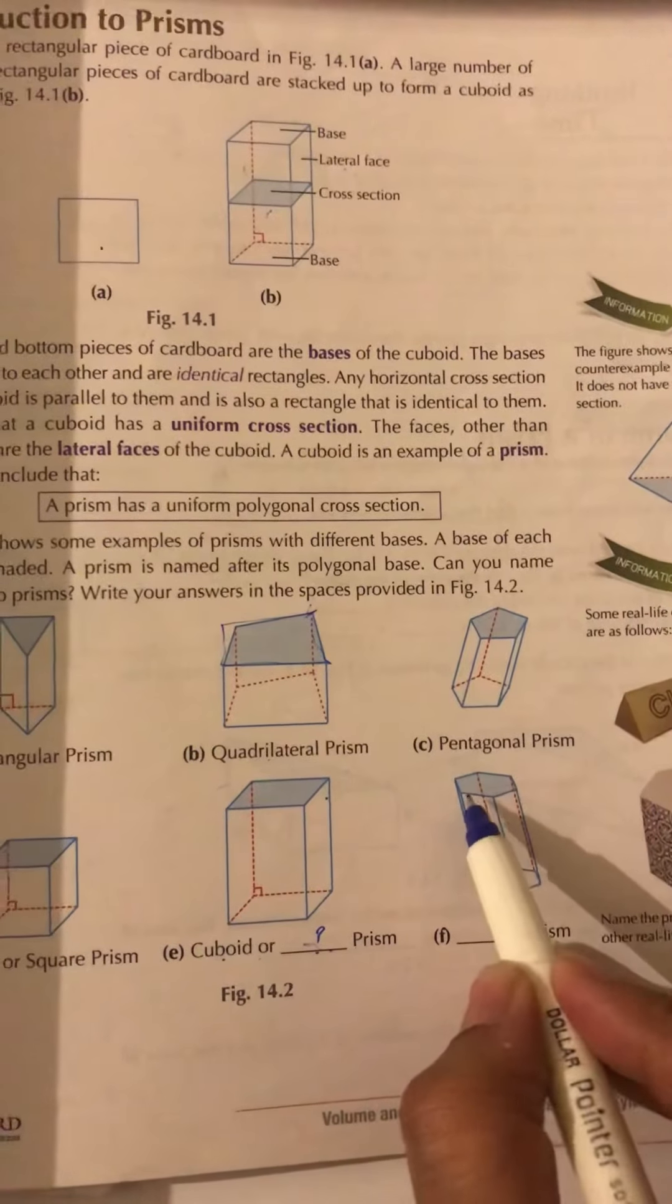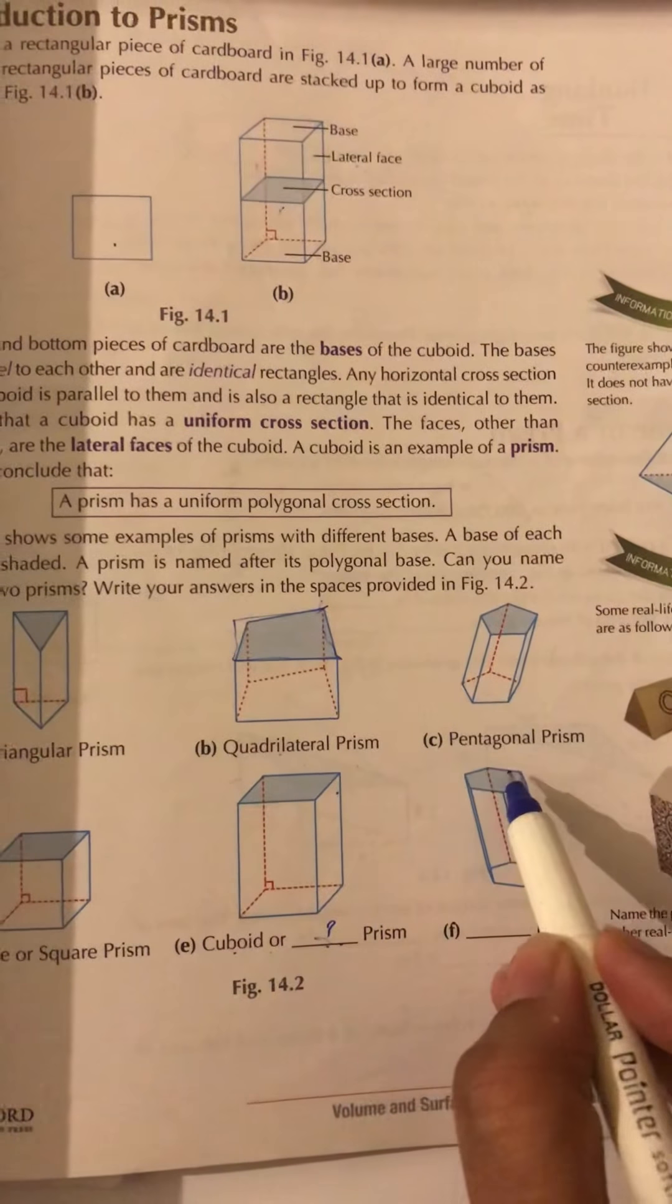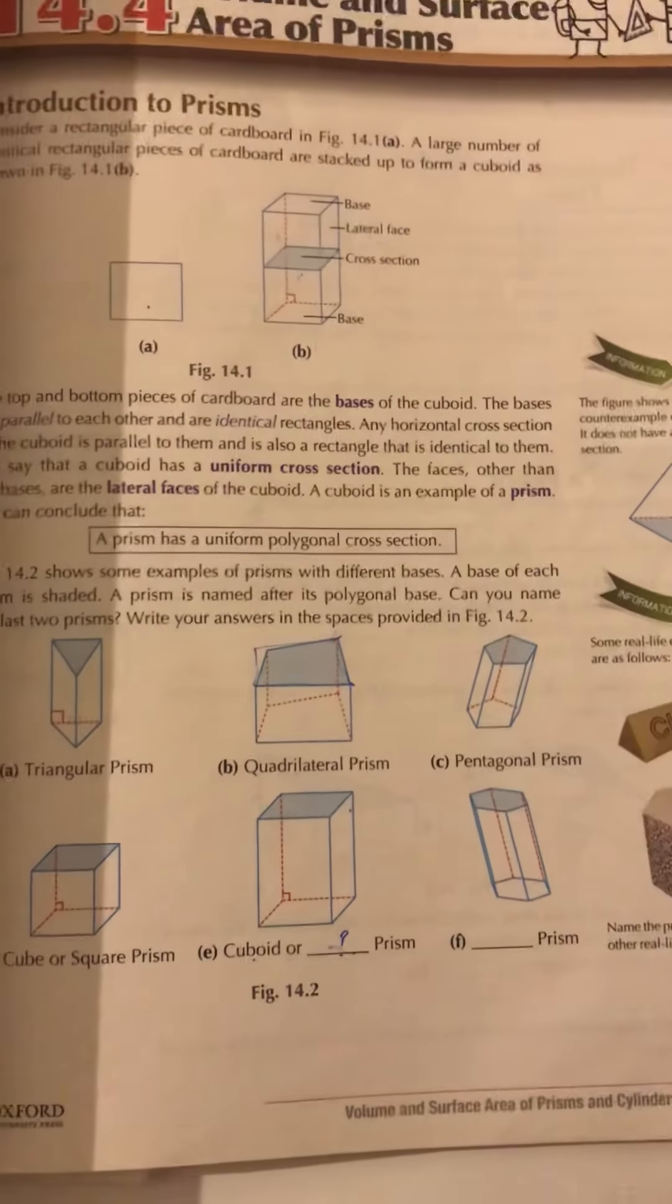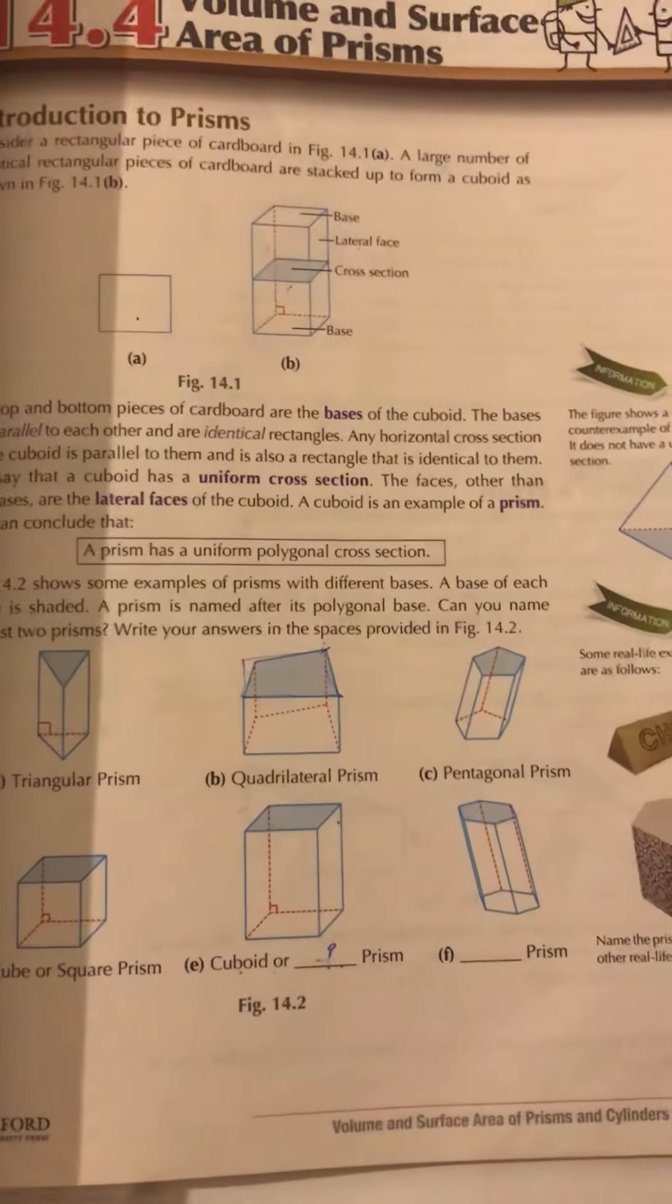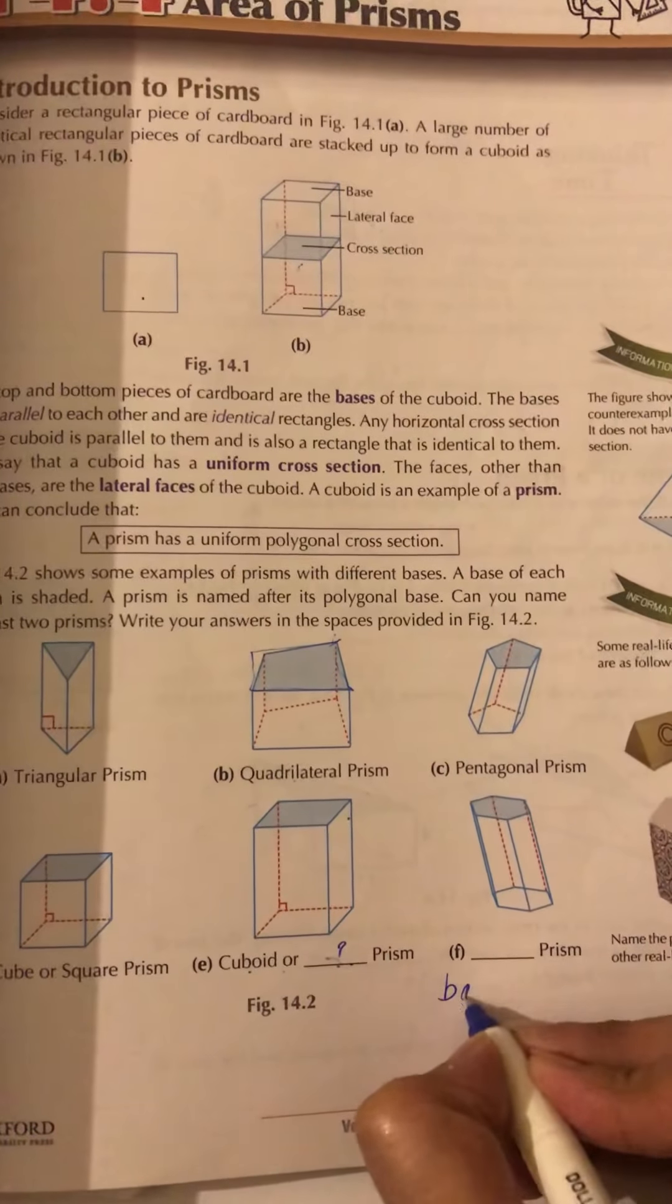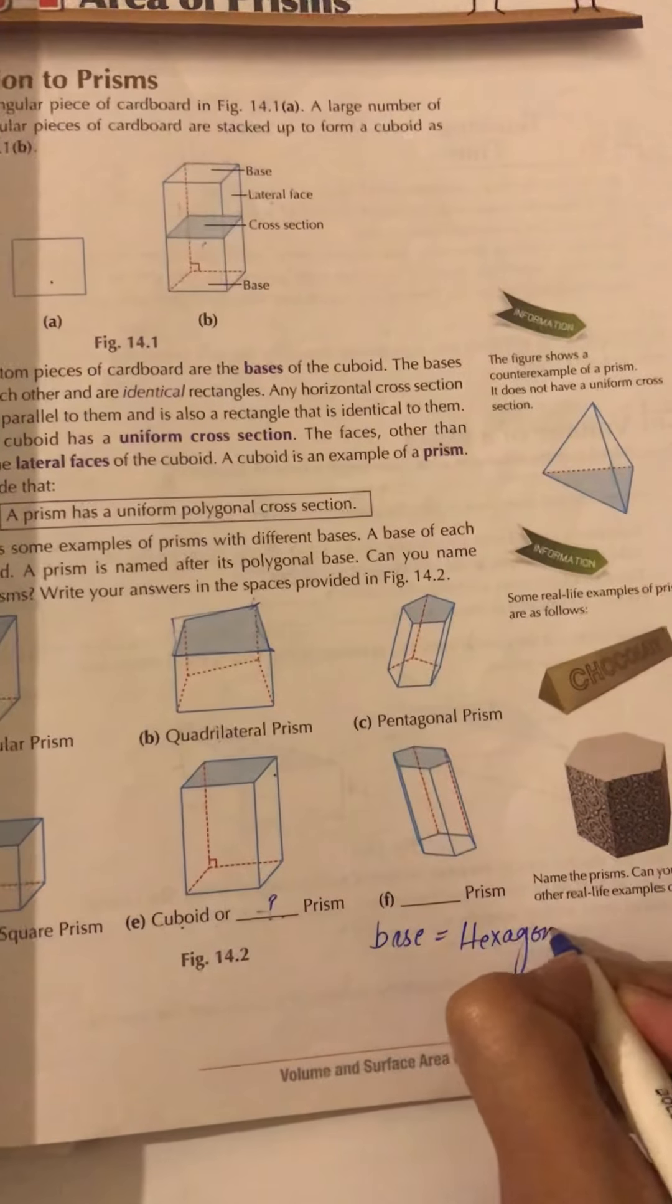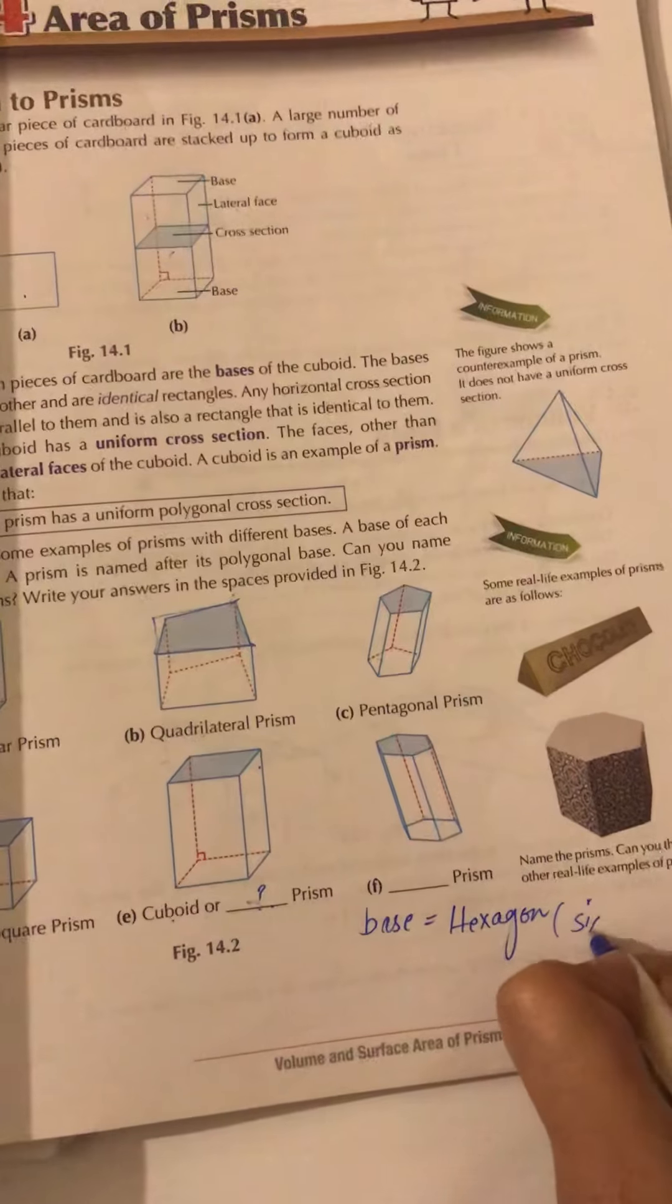Similarly, what is the base? We will count the sides of the base: one, two, three, four, five, six. And a six-sided shape is known as hexagon. So the base is equal to hexagon, yes, as it is a six-sided shape.